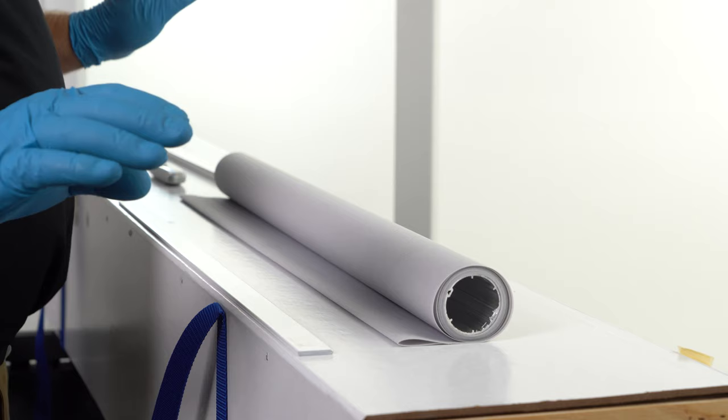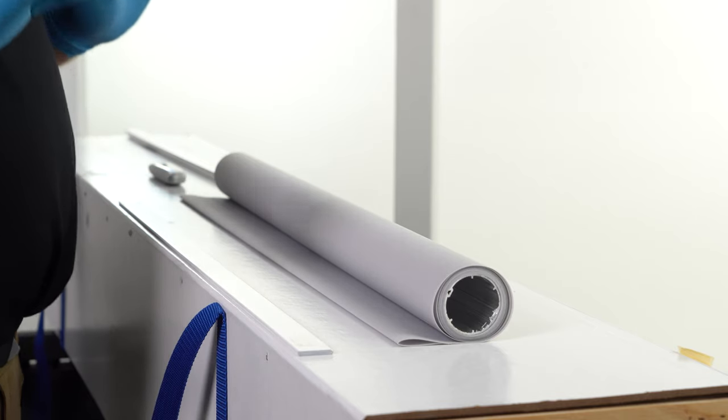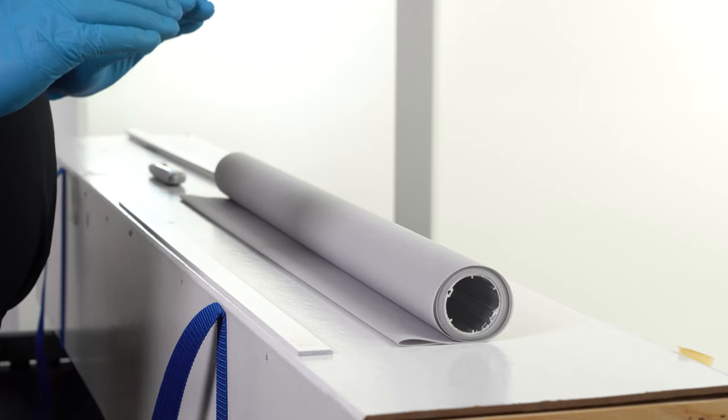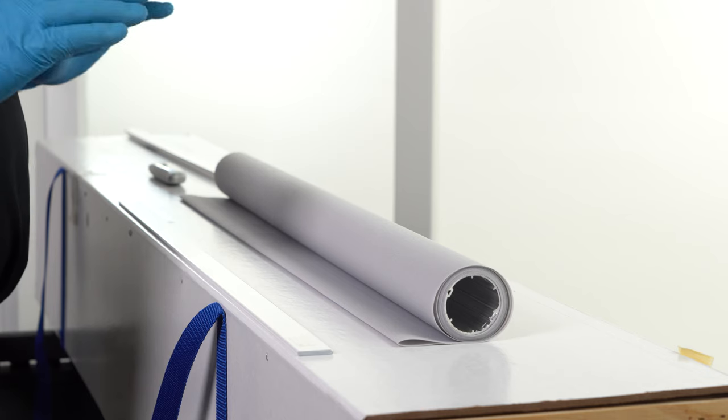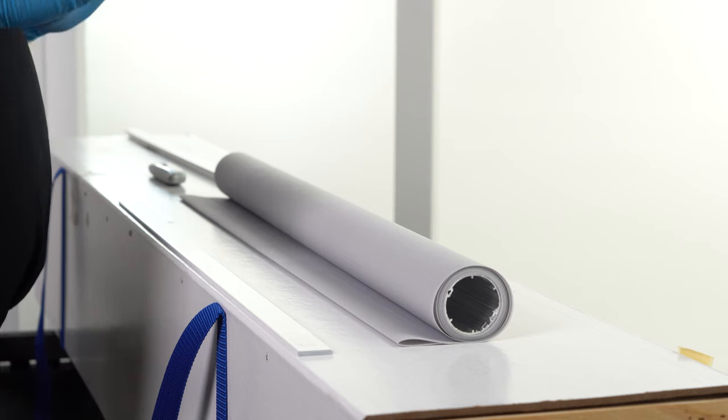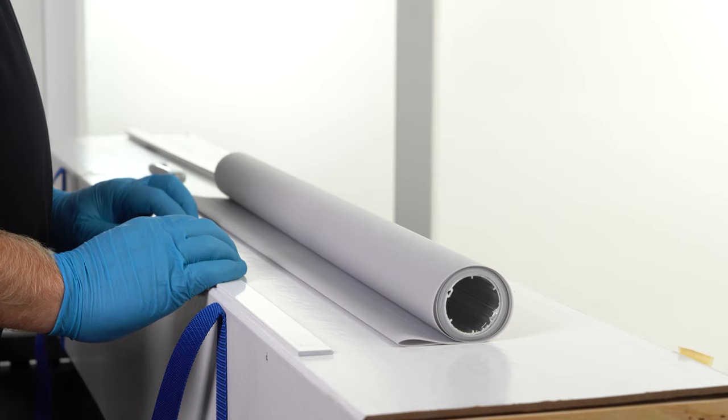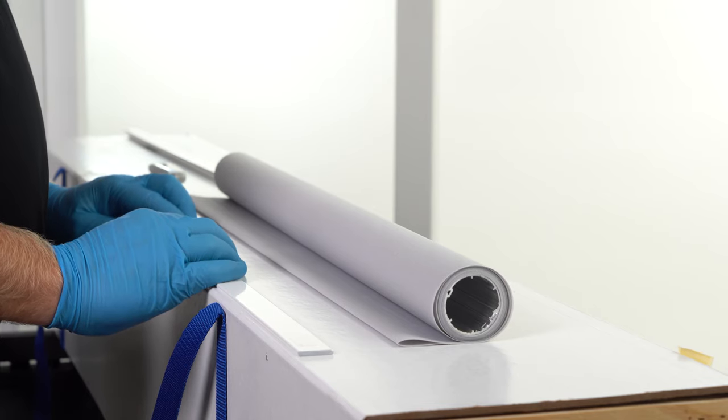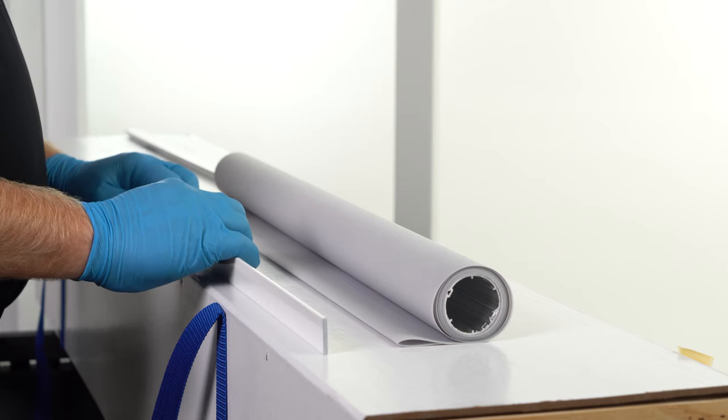It says nowhere in the Jay Geiger Handbook that you need to install the hem bar before you install the shade. You 100% can install the shade first and then install the hem bar afterwards if you wish to or can. If you can't, however, you'll have to do this down on the ground.